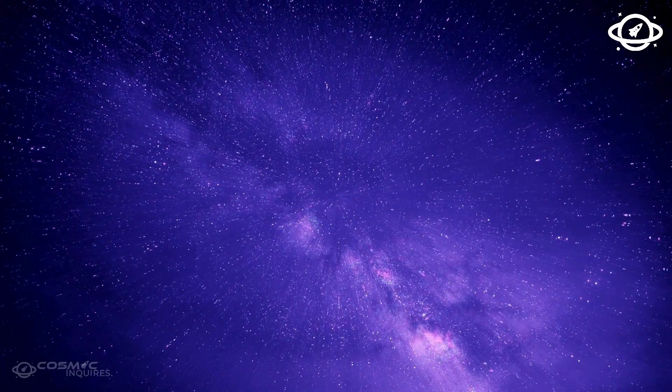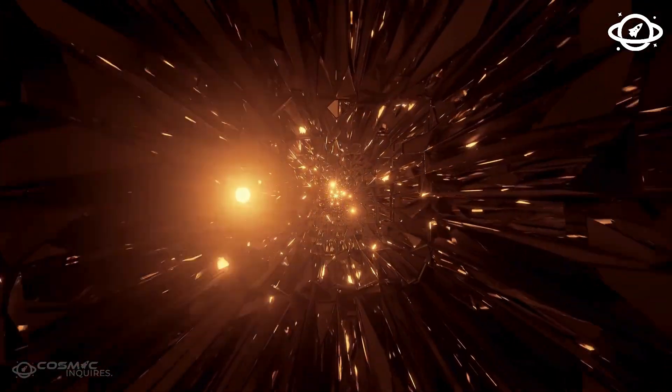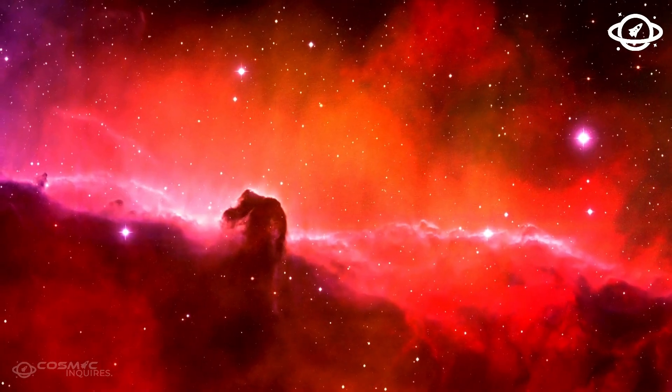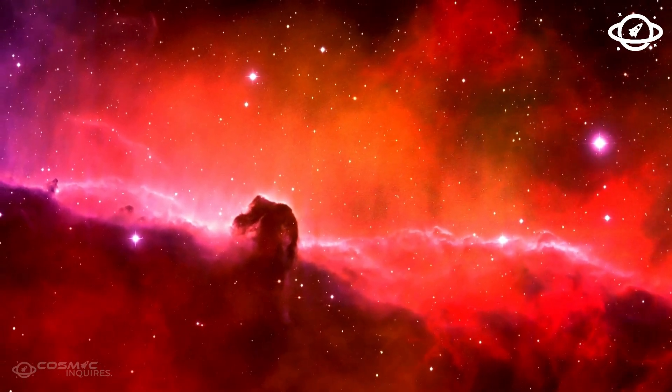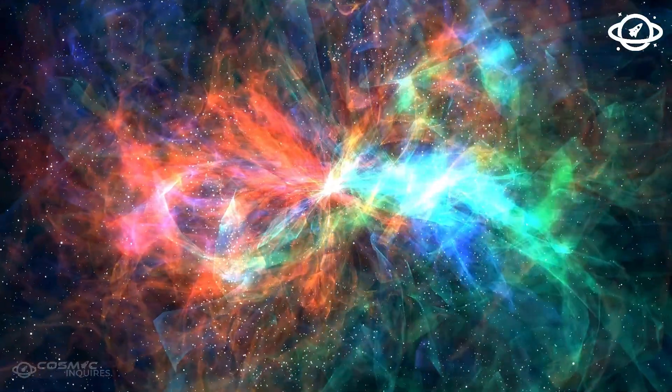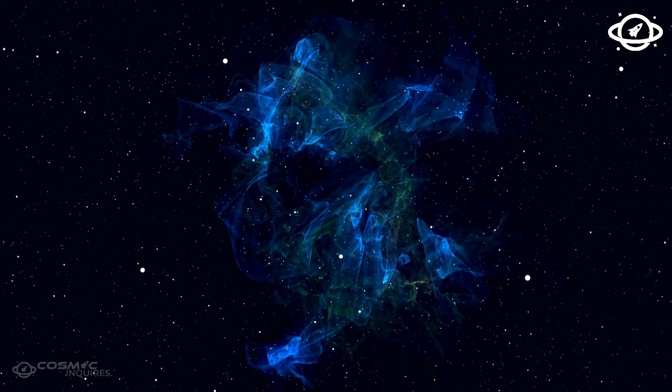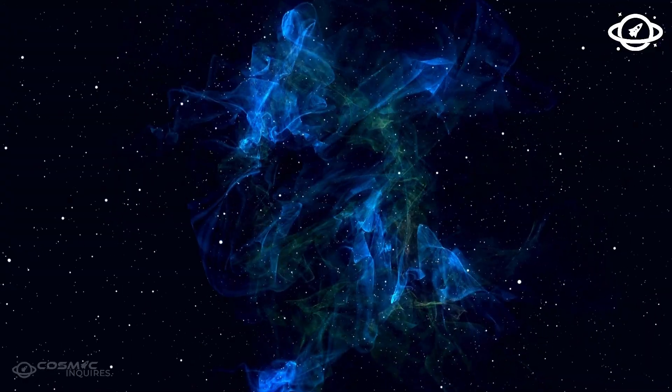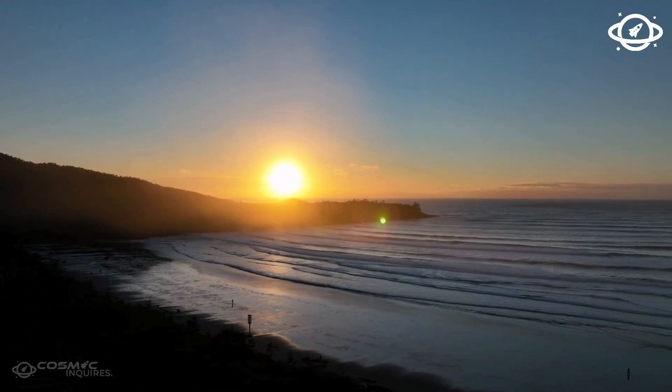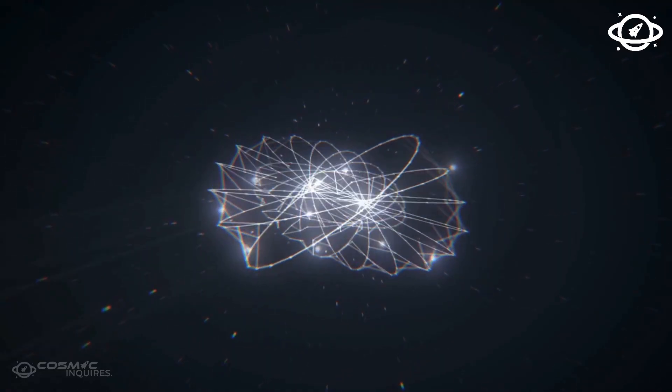Betelgeuse will never return. Its place in Orion will become an expanding cloud of superheated gas and glowing debris. But its death isn't an end. It's a gift. A gift of knowledge, of elements, of perspective. It reminds us that our sun too will one day fade. That even the most brilliant lights in the sky have a final act. And yet, from this ending comes the blueprint for everything new. Because without supernovae, there are no planets, no oceans, no life. And now, thanks to the James Webb Telescope, we can finally witness that full cycle, from fiery collapse to the raw materials of creation.